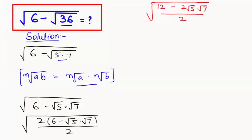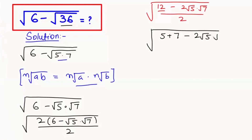Next step, I'm going to split this 12. So we get 5 plus 7 minus 2 root of 5 times root of 7, over 2.